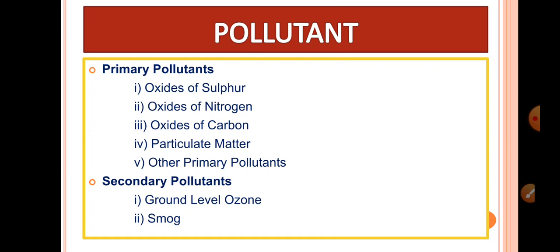Vehicles and cars produce oxides of carbon. Particulate matter refers to dust particles. Other primary pollutants include dusts and smoke.